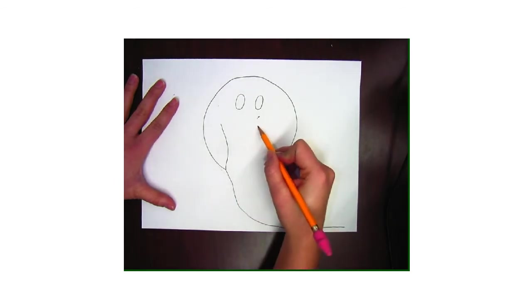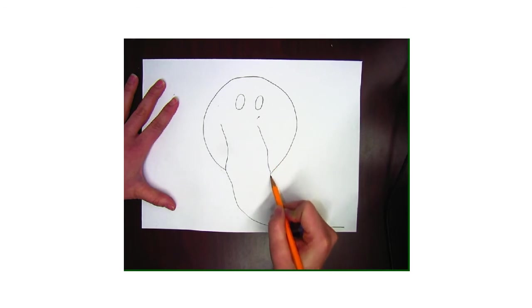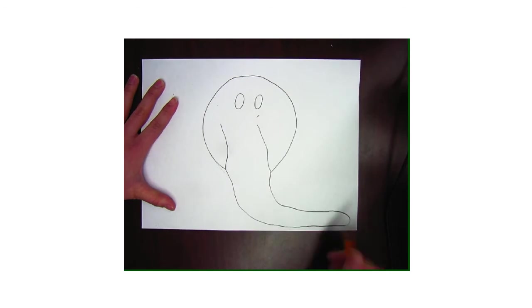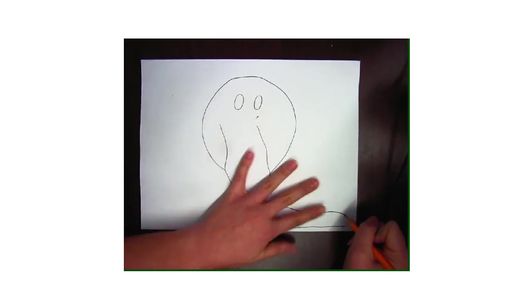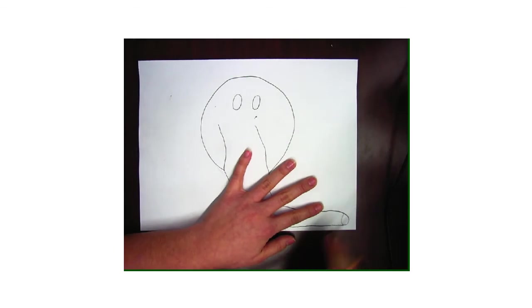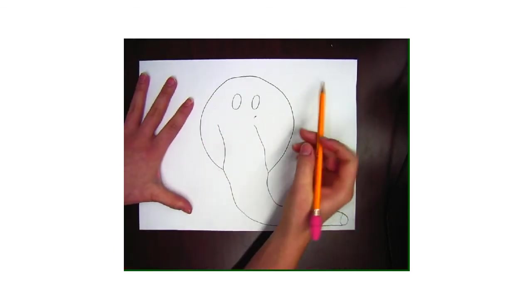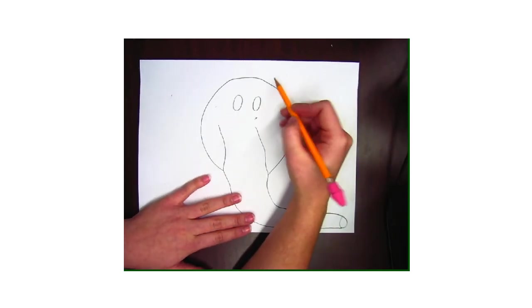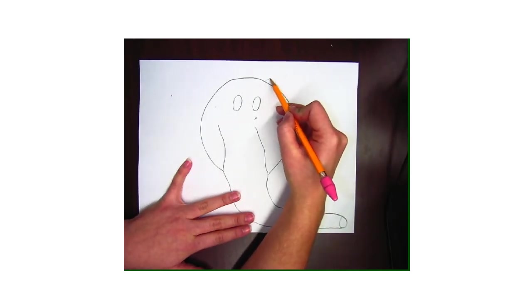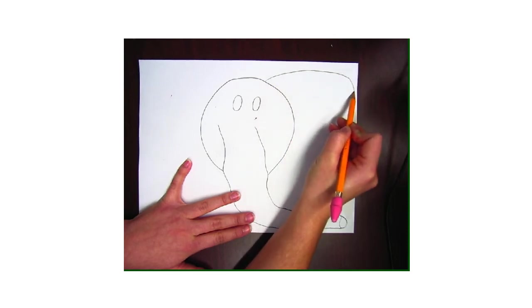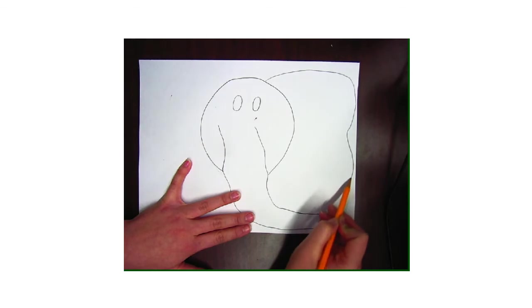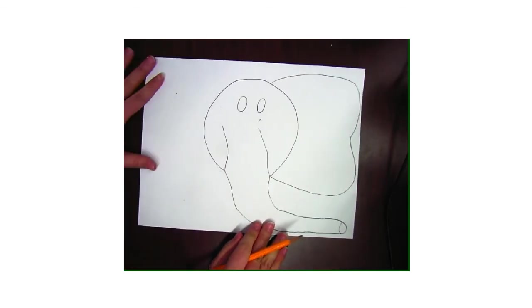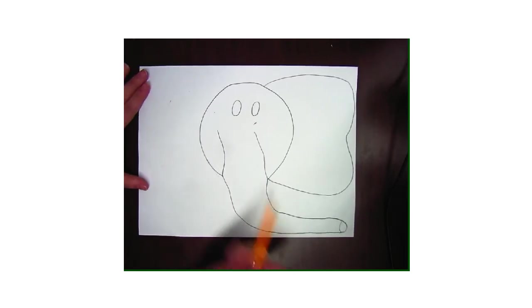So then we're going to draw the other side of the trunk, round about right there, and then we're going to draw the tip. Okay, just like that. All right, so next elephants have huge ears. Okay, so we need to draw two ears. They kind of look like butterfly wings. Okay, so you're going to try to do the same thing on this side, just like that.